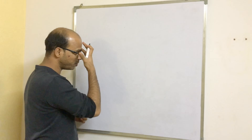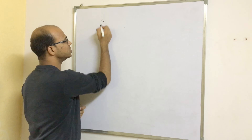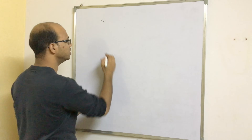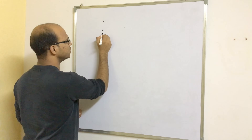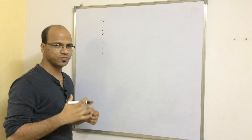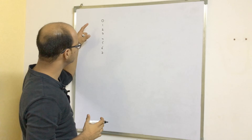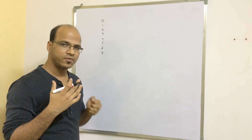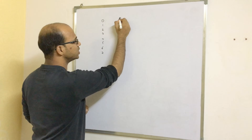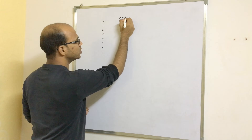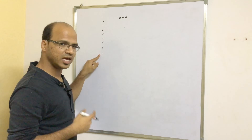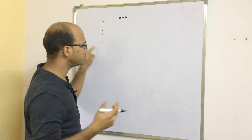Let's say we have the first 8 decimal numbers — we'll take an octal system here. So we have 0 through 7, that's 8 values. Now we'll try to find the binary format of 0. The binary format of 0 will be 000. I'm taking 3 bits because to represent 8 values we just require 3 bits.